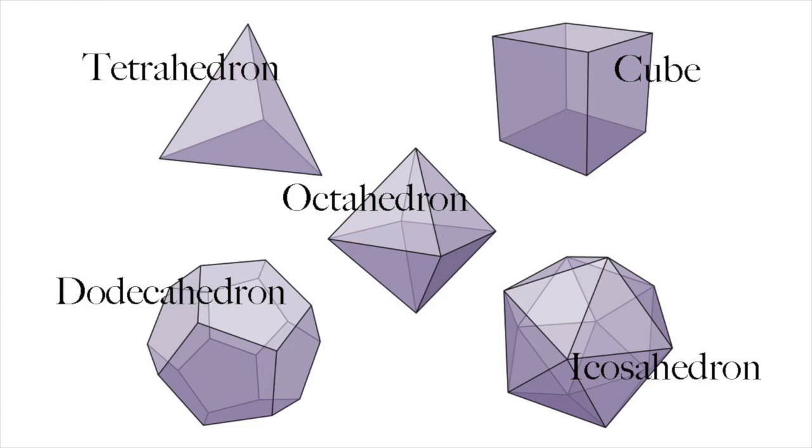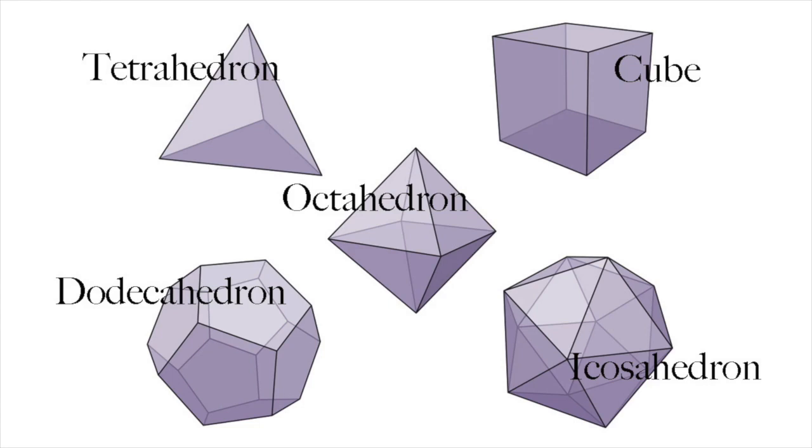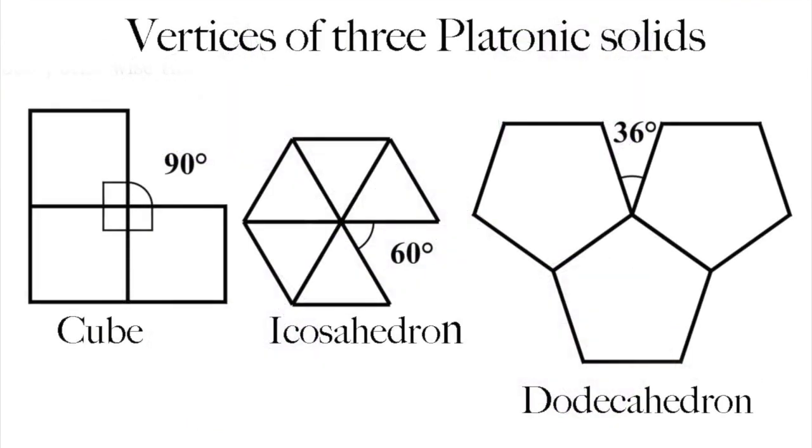It's easy to see why there can't be any more than the five Platonic solids. At least three faces have to meet at each corner or vertex in order to make a closed 3D shape. And when you add up the internal angles that meet at a vertex, it must come to less than 360 degrees. Otherwise, the shape would just flatten out.